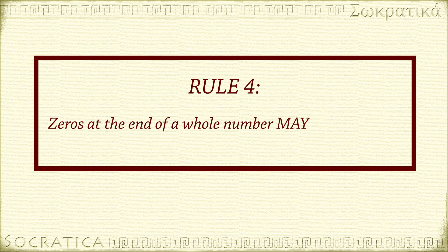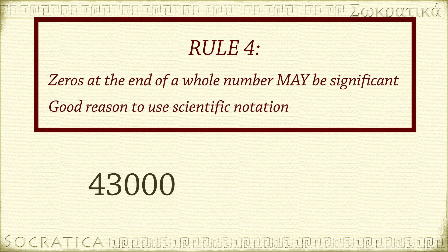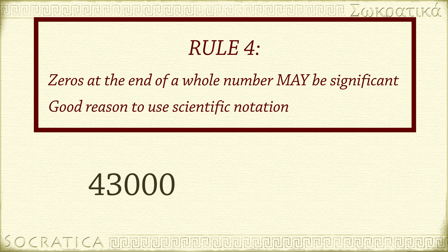Rule 4: when a number ends in zeros but contains no decimal point, the zeros may or may not be significant. This is confusing, and it's a real problem when recording data. For example, it can be argued that 430,000 may have 2, 3, 4, or 5 significant figures, depending on how many of those zeros were measured. If you want to indicate all zeros were measured, you might add a decimal point at the end — 430000. — or put a line above the digits that were actually measured, though that's hard to type. There just isn't a real standard for indicating this kind of measurement.